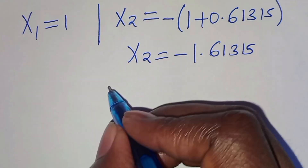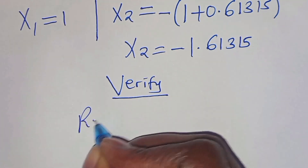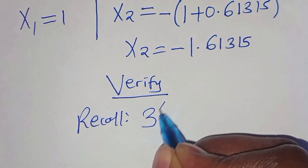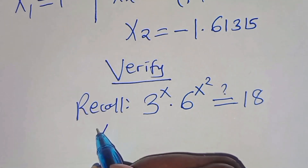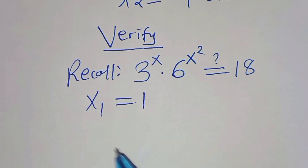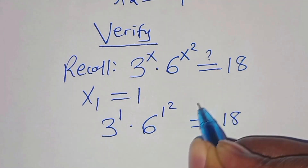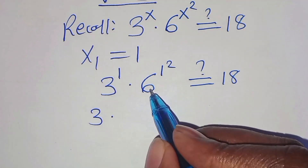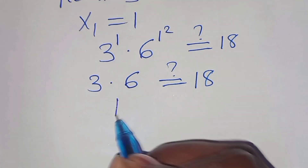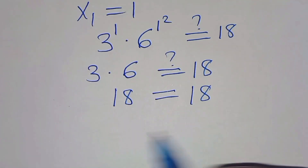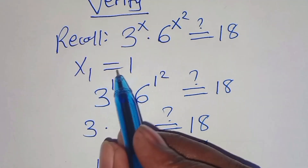Let's verify that these two values of x satisfy the equation 3 to the power of x times 6 to the power of x squared equal to 18. Starting with x1 equal to 1: substituting gives 3 to the power of 1 times 6 to the power of 1 squared, which is 3 times 6 to the power of 1, which is 3 times 6 equal to 18. The left-hand side equals the right-hand side, so x1 satisfies the equation.